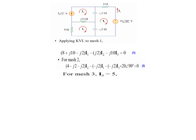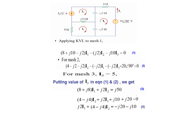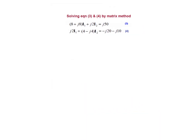Coming to mesh number 3: since it has a current source, there is no need to write a KVL equation. We simply write I3 equals the current source value, so I3 equals 5 amperes. Substituting I3 = 5 in equations 1 and 2 gives two equations only in terms of I1 and I2.